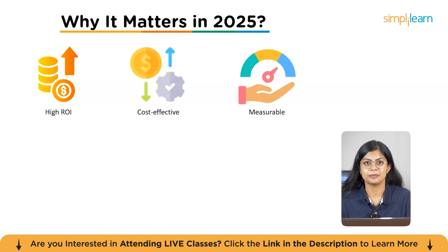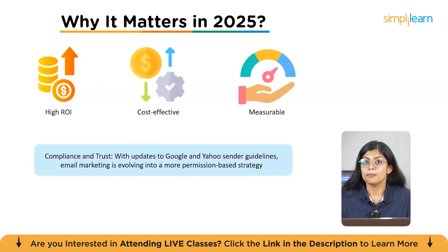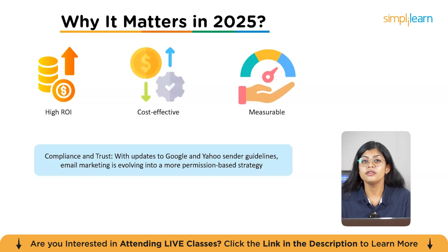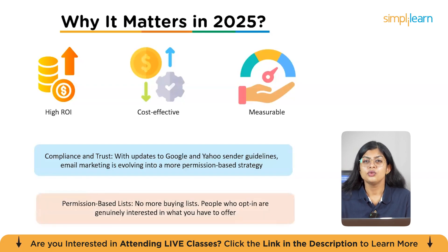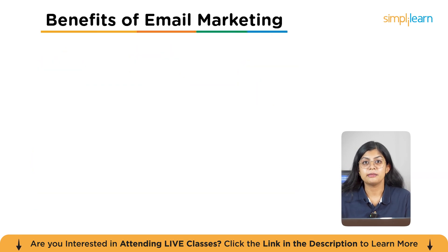Why is email even more important in 2025? Compliance and trust: with updates to Google and Yahoo sender guidelines, email marketing is evolving into a more permission-based strategy, ensuring that trust is at the forefront of every campaign. Permission-based lists mean no more buying lists — people who opt in are genuinely interested in what you have to offer, which means higher engagement and better conversions.